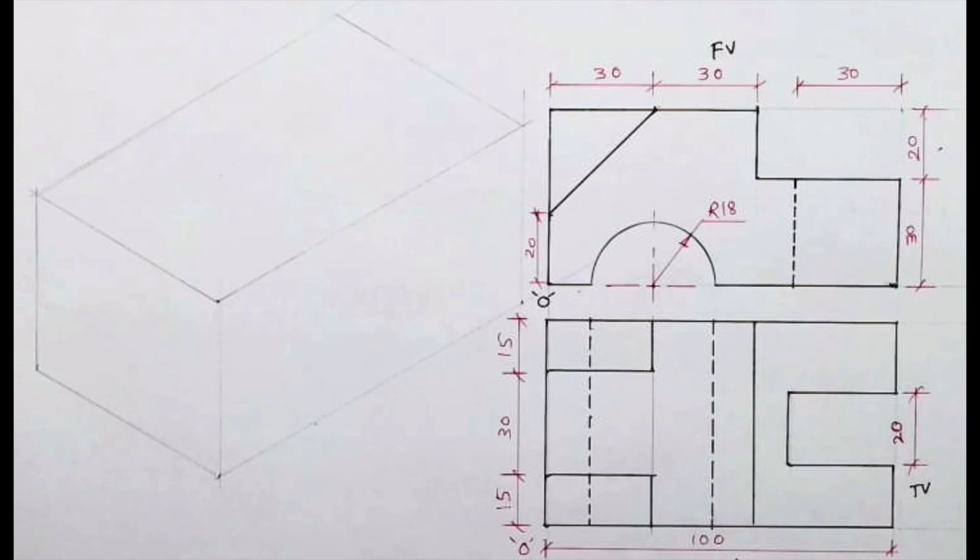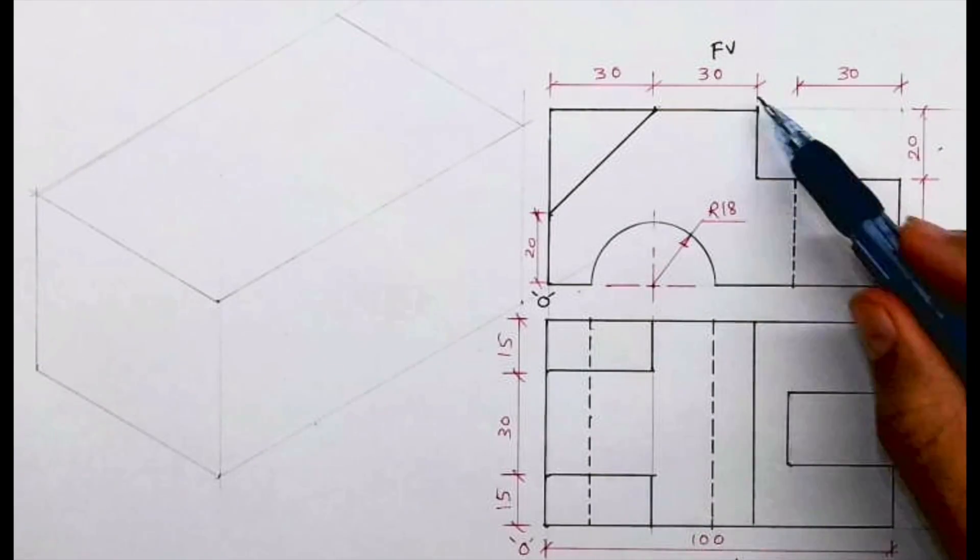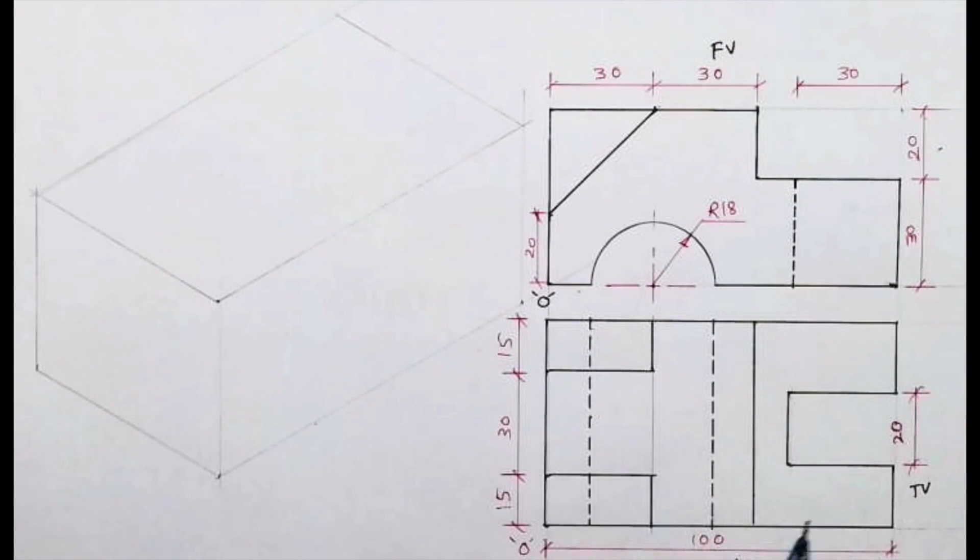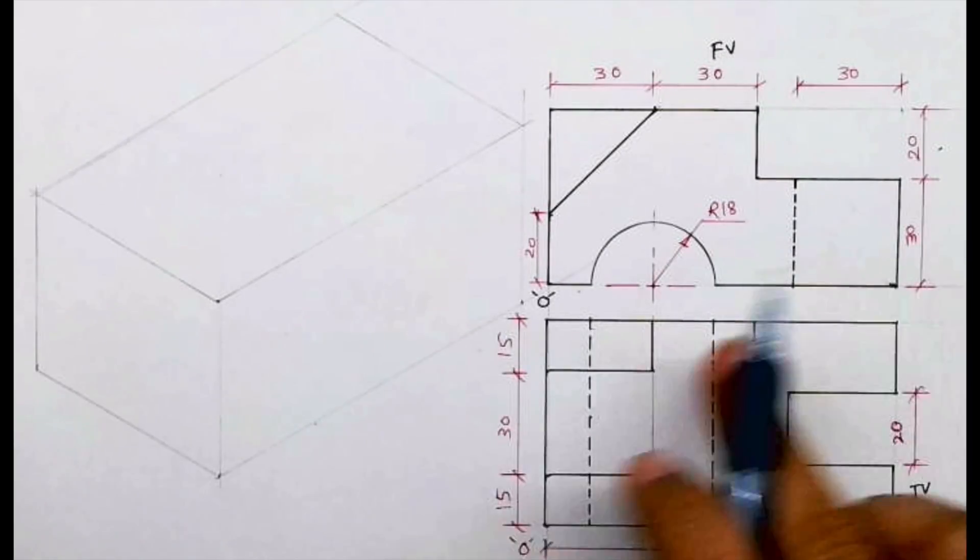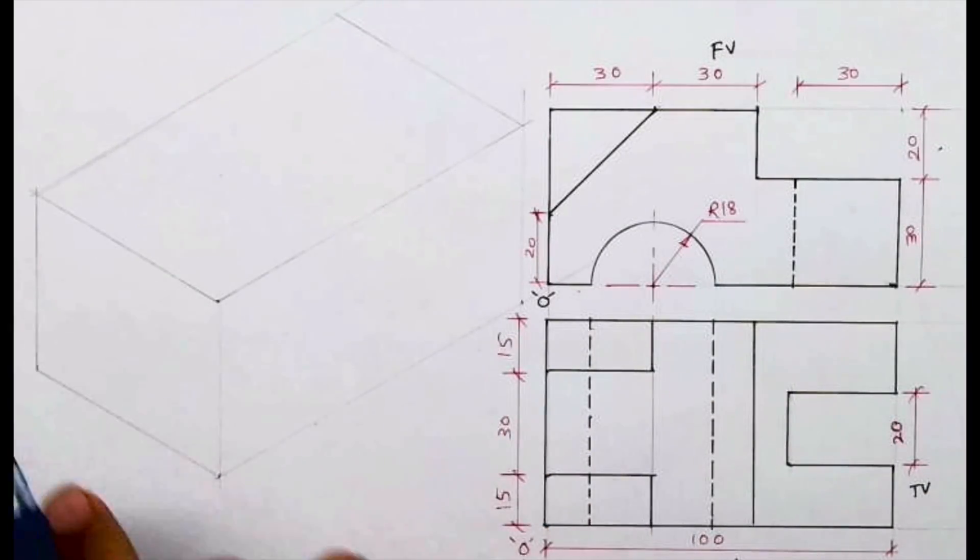Welcome to technical drawing. Today we'll see this sum in isometric view. Front view and top view are given. If you see, the right side has length 100, height 50, width 60. So we'll draw the layout. We'll take 100, 50, and 60 and draw a box.